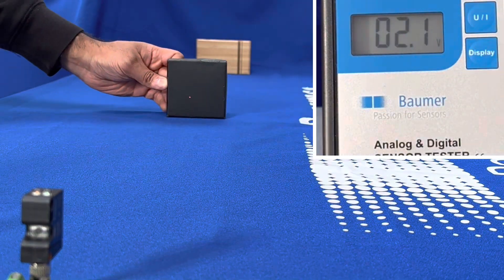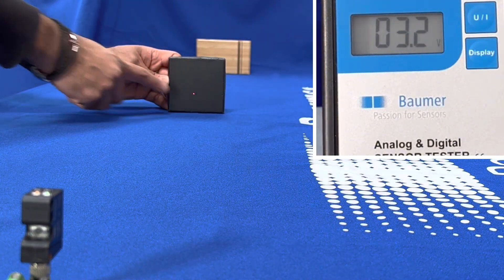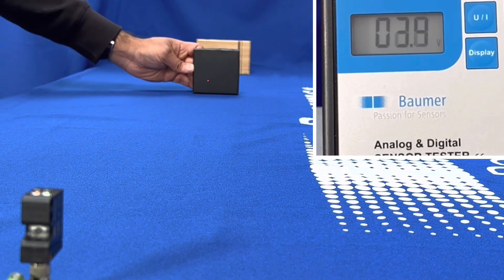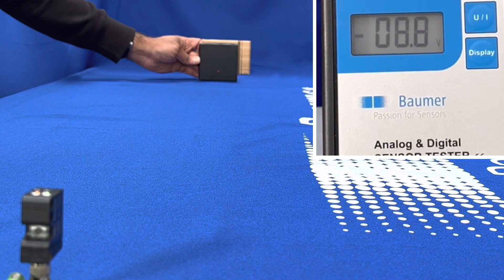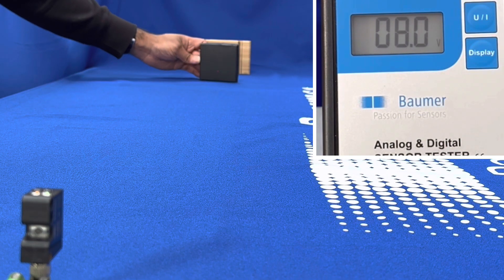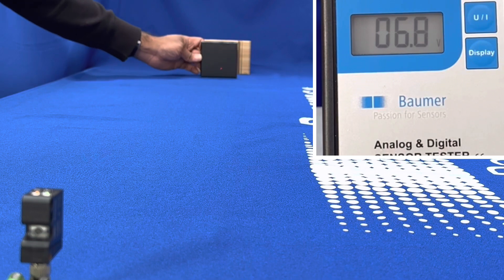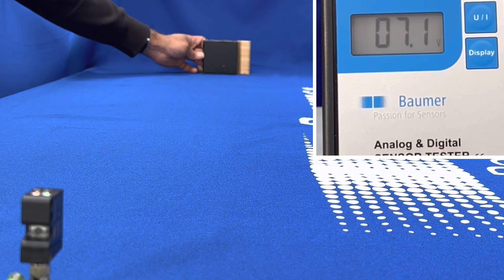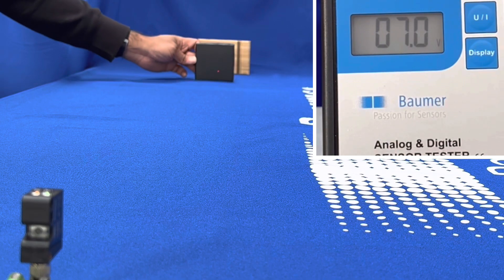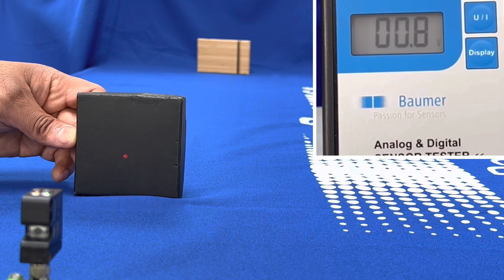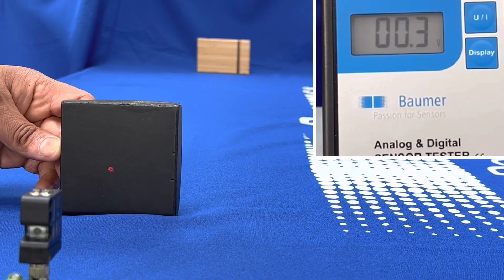You can see the beam spot there with a nice analog output again. It can deal with the angle change fairly well and gives us pretty much the same answer here where the wooden target was, all the way up to where the sensor finishes, up to its dead zone.